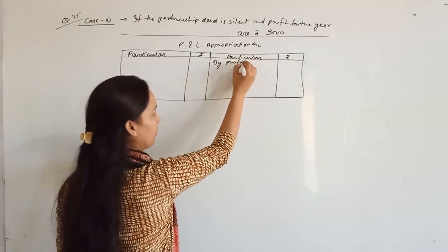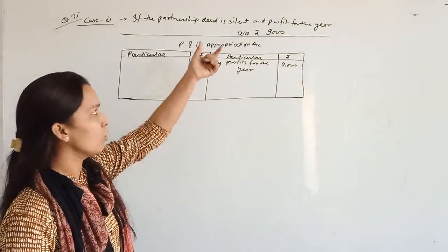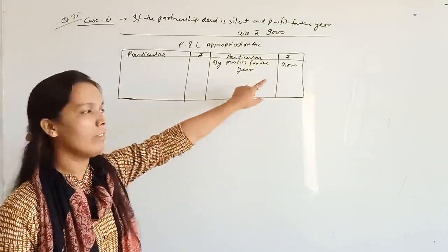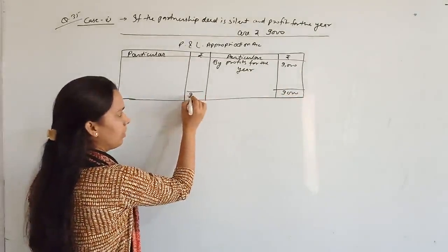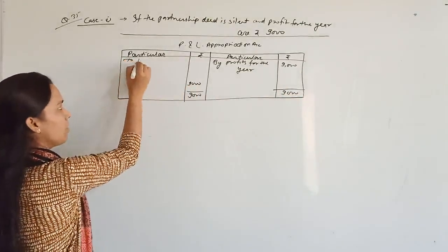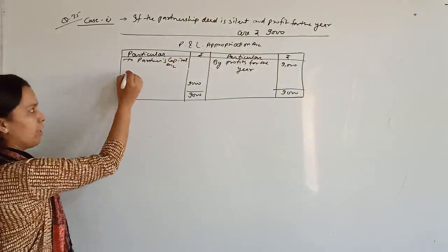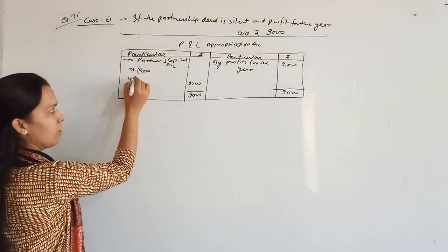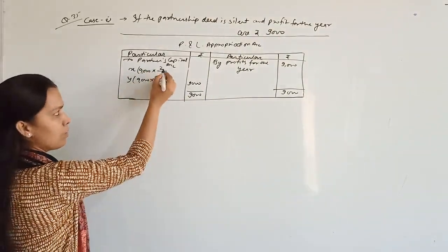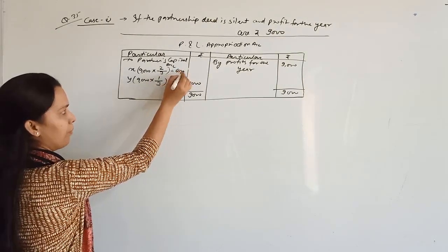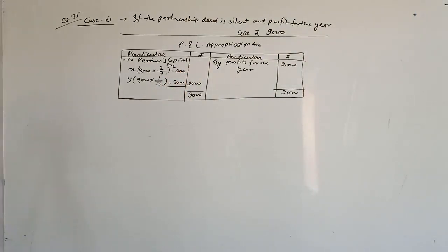Write profits for the year: 9,000 rupees. Since the partnership deed is silent, no interest on capital is given, so available profits of 9,000 will be distributed among the partners in their profit sharing ratio of 2:1. For X: 9,000 × 2/3 = 6,000 rupees. For Y: 9,000 × 1/3 = 3,000 rupees.